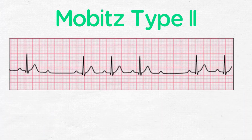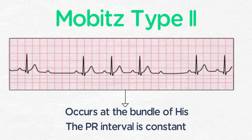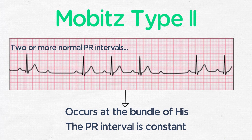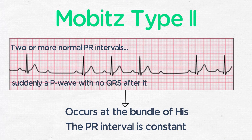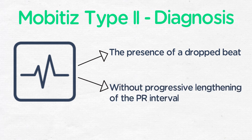The second variant is called Mobitz type 2. This type of block occurs at the bundle of His, just below the AV node. Progressive lengthening of the PR interval does not occur — the PR interval is constant. Instead, some signals get through normally and some do not. On EKG, you will see two or more completely normal beats with normal PR intervals, unless there is also a first-degree block, and then suddenly a P wave with no QRS after it. The ratio of conducted to non-conducted beats varies constantly, and in one tracing you may see two to one, three to one, three to two, or other ratios of P waves to QRS complexes. The diagnosis of Mobitz type 2 requires the presence of a dropped beat without the progressive lengthening of the PR interval that is seen in type 1.